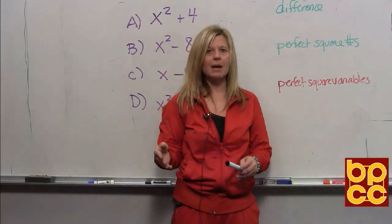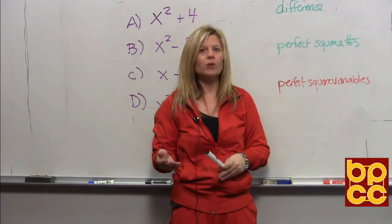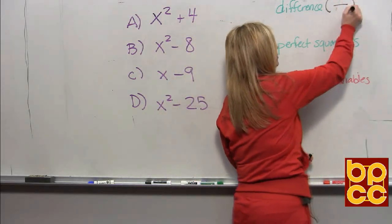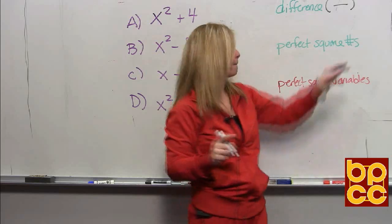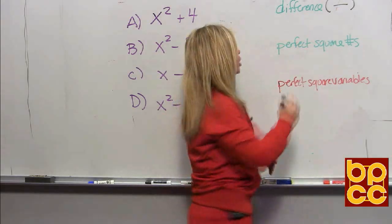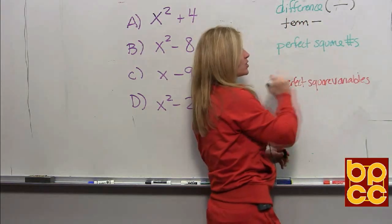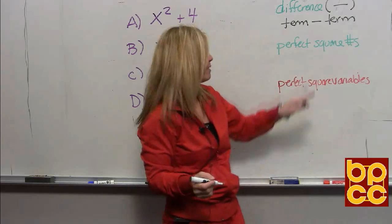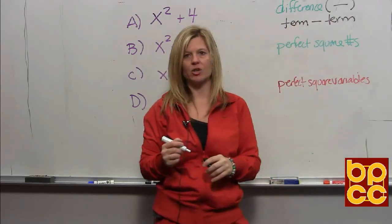The first thing is to understand the name of this rule is called difference. The word difference automatically implies the operation subtraction. So in order to do this rule, your expression must have one subtraction symbol — a term in the front, a subtraction symbol, and a term in the back. To do this rule, we'll have a binomial: only two terms connected by subtraction.